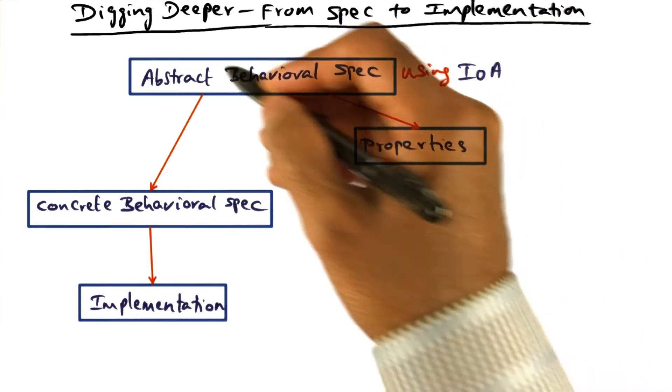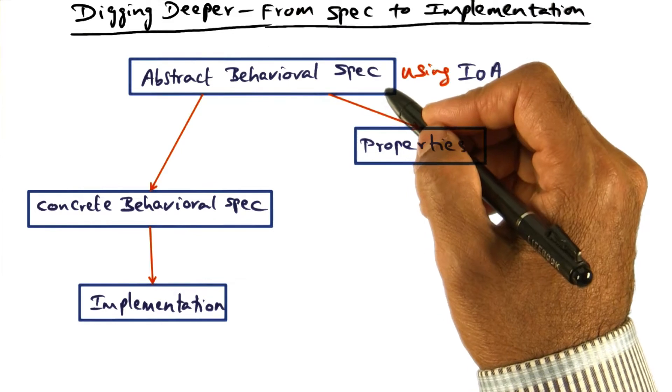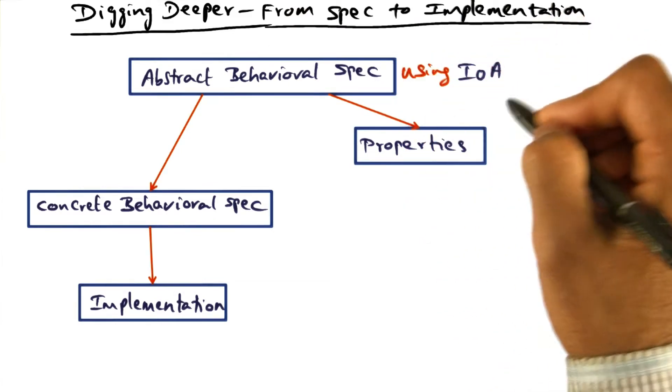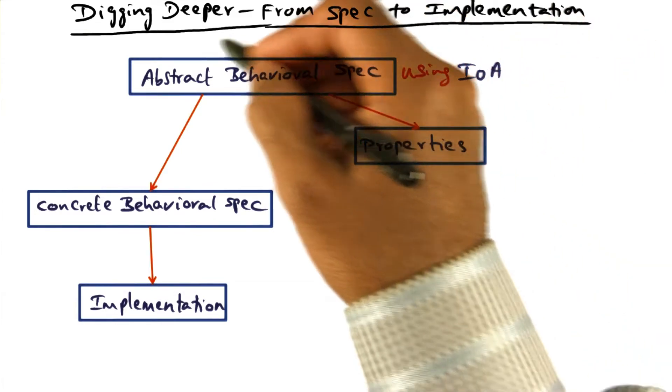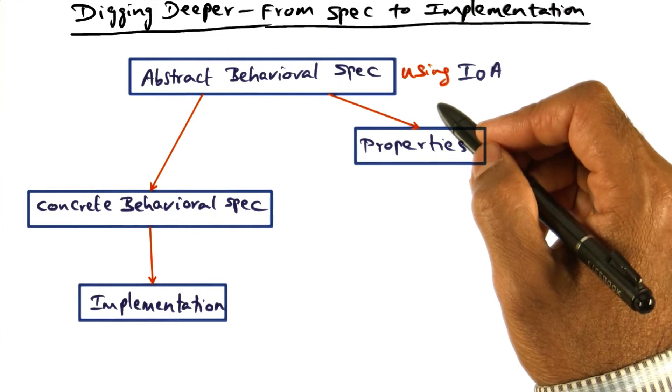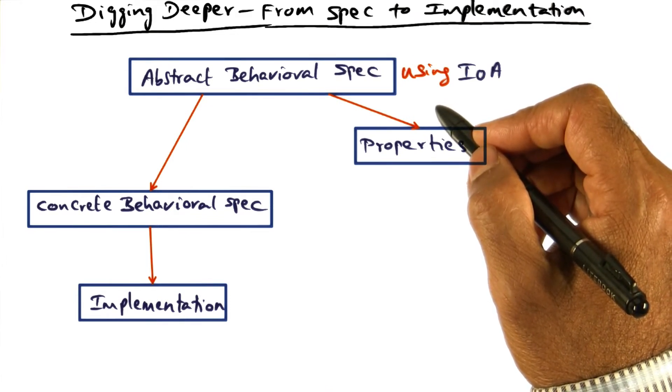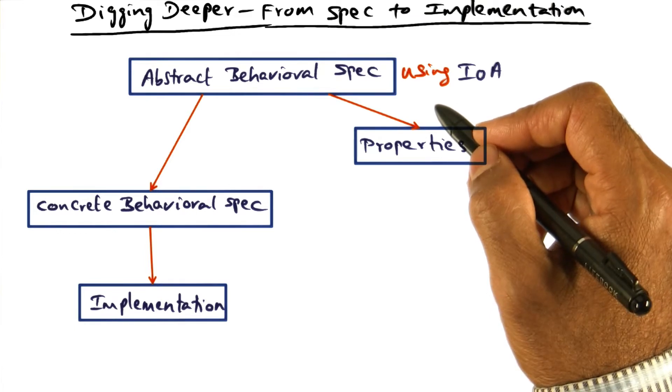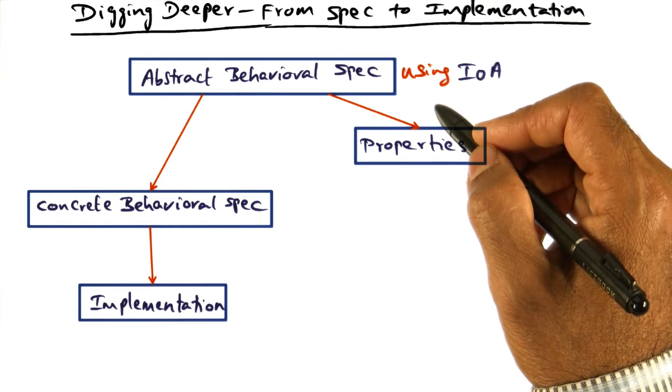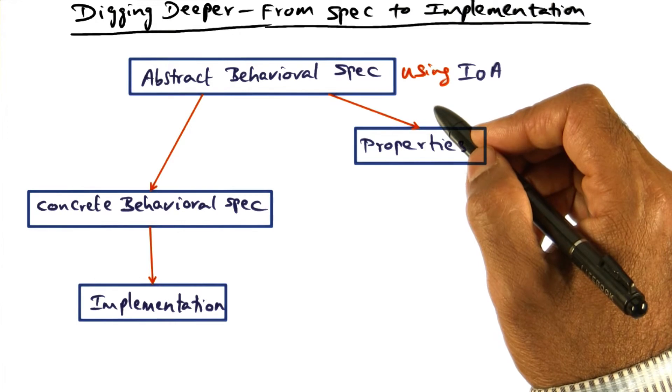We start with what is called an abstract behavioral spec, where we use IO automata. This abstract behavioral spec is where we describe the functionality of the subsystem in terms of requirements, presenting the high level logical specification of the components.